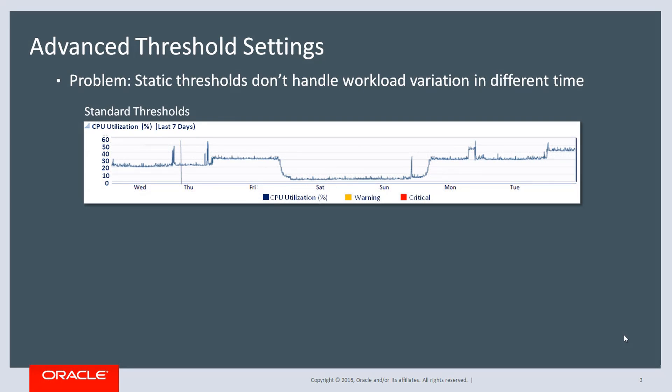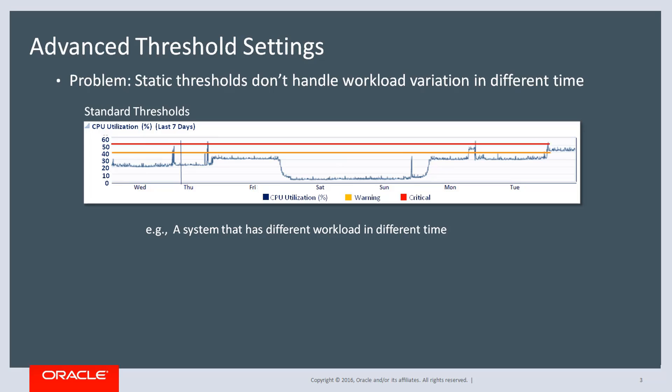But what is Advanced Threshold, and why did we introduce this feature? Let me quickly talk about this at a high level before going into the details. The problem with traditional monitoring is that the metric threshold, either critical or warning, is static — it is a single fixed value per metric. So it does not handle the workload variation that can happen at different times very well.